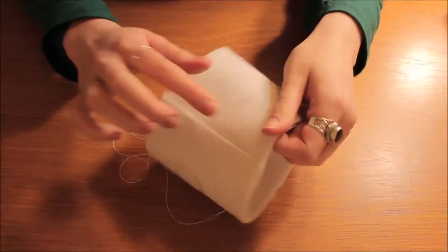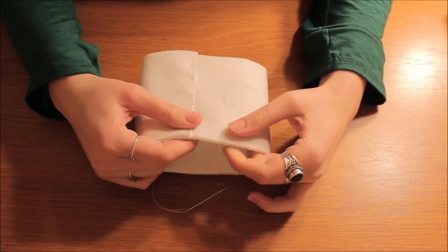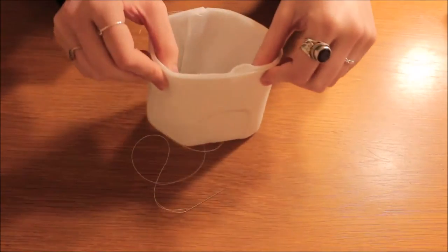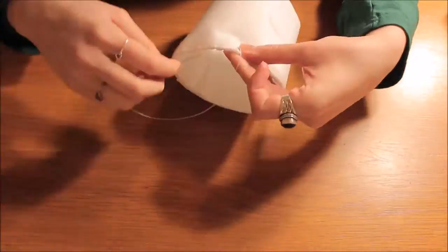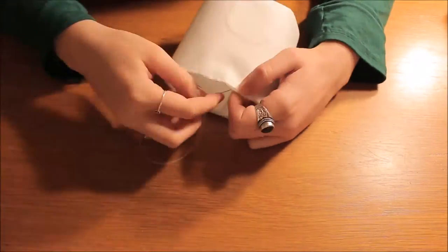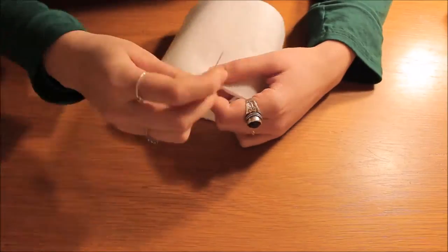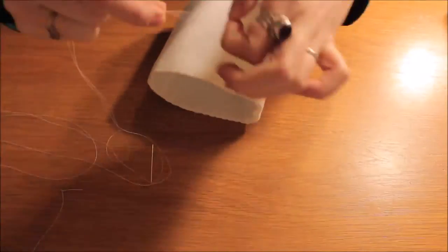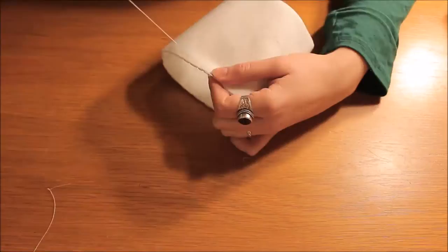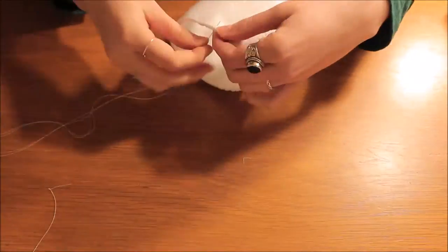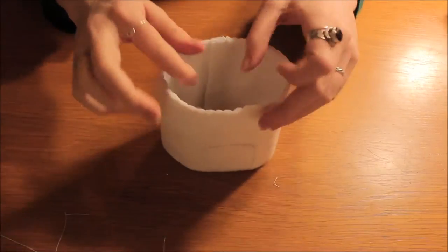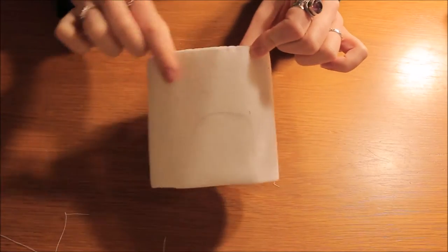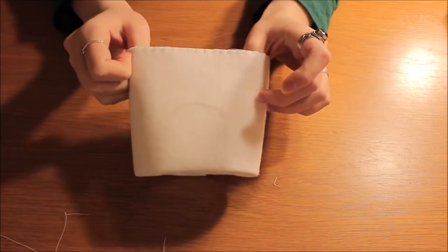So now I've stitched my back here and I'm going to top stitch around the top of the mushroom house in a blanket stitch. Okay, so I finished top stitching around the top edge of my mushroom house in a blanket stitch.